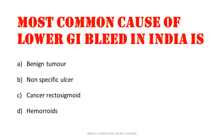The most common cause of lower GI bleeding in India is: benign tumor, nonspecific ulcer, cancers, rectosigmoid, and hemorrhoids. I think you people might have arrived with the answer. The answer is hemorrhoids. Yes, it is sure.